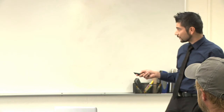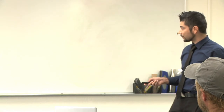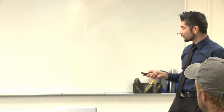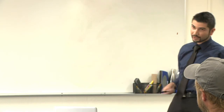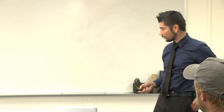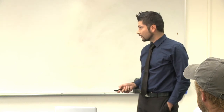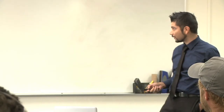Here we saw this staining symptom when the tree still has foliage and is still trying to respond. As time goes on, you get this appearance where it looks more dry. When you look closer, you'll see that it's pelted with attacks, and this tree actually had no foliage. So this is a candidate to be removed because it's supporting a large population of beetles that can spread to other areas. Estimated 53% of Salix species were infested in the Tijuana River Valley as of 2015 — this is before and one year after. Pretty devastating effects.